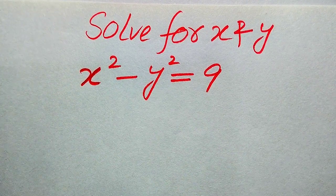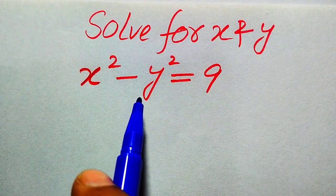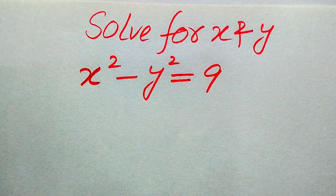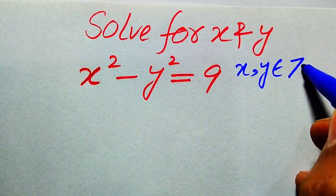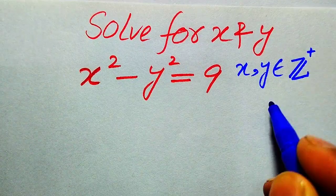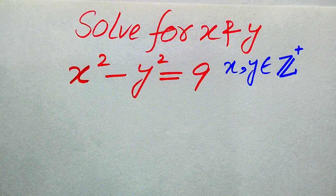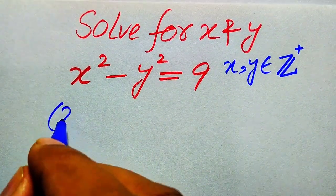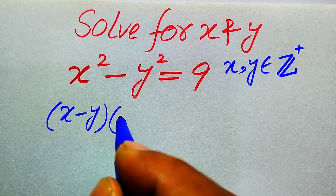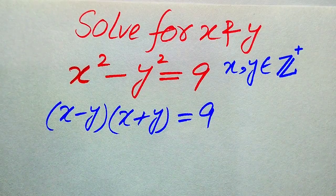Hello everyone. How to solve this problem for the values of x and y if we have x squared minus y squared equals 9? We solve this problem for all the positive integer values of x and y. In the left hand side this is a very famous algebraic formula, so we write x squared minus y squared as x minus y times x plus y, and this whole equation equals 9.